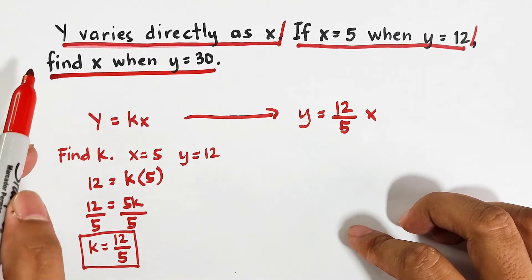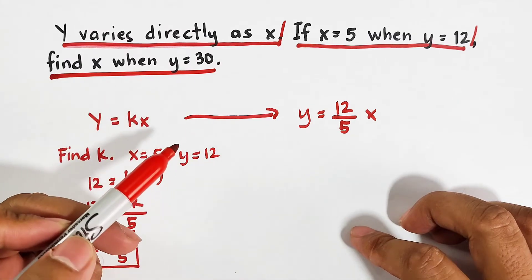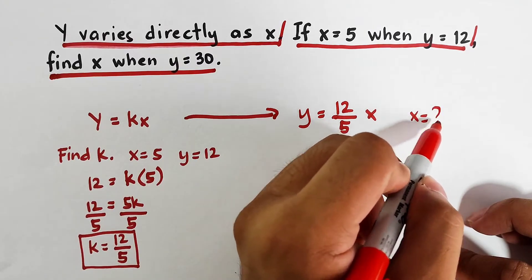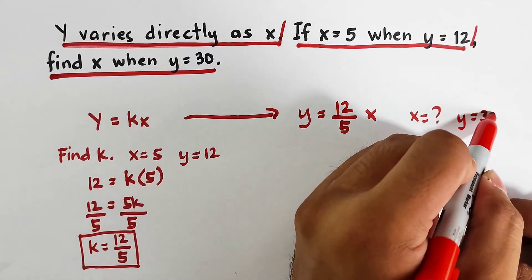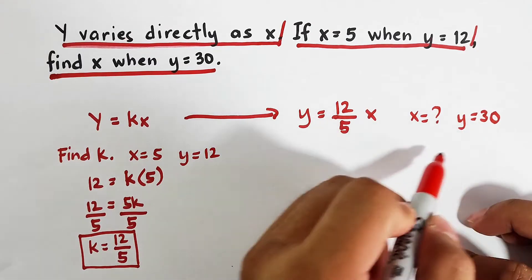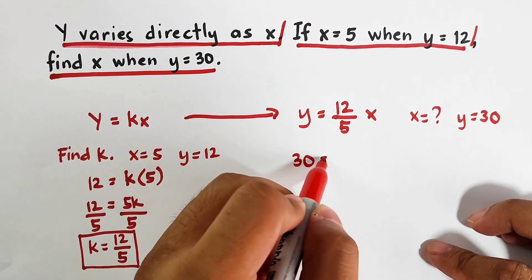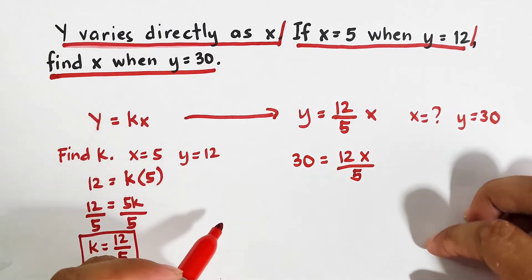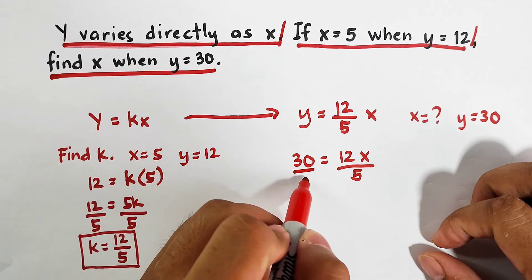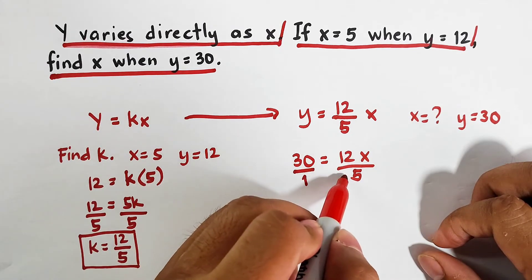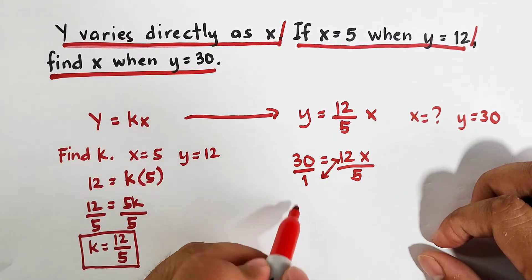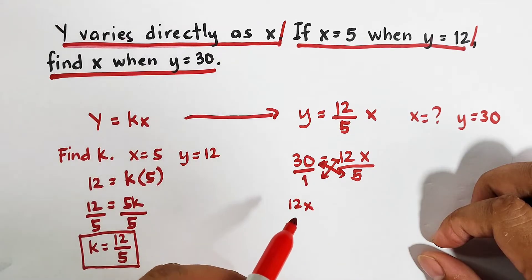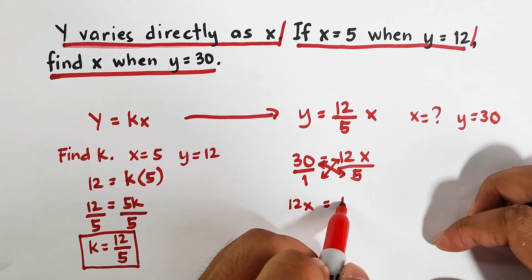The main problem is that find x when y is equal to 30. Your x is missing. Your y is equal to 30. We will plug in 30 here. We have 30 is equal to 12x over 5. And to solve that, we can cross multiply. Cross multiply this one.